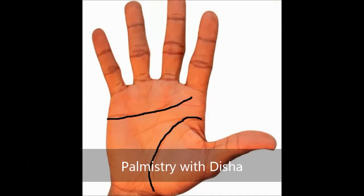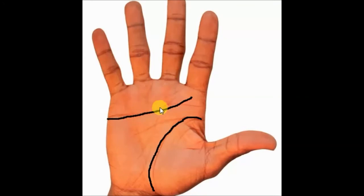The Simian line is when we see that there is only one line going across the palm in place of the head line and heart line. There is no head line, and only one line is going in place of the heart line and head line.